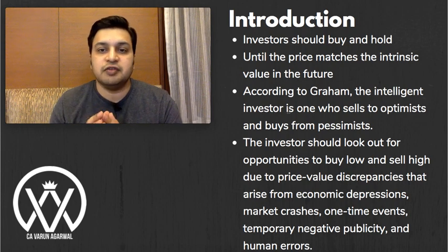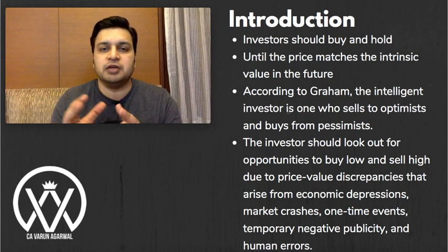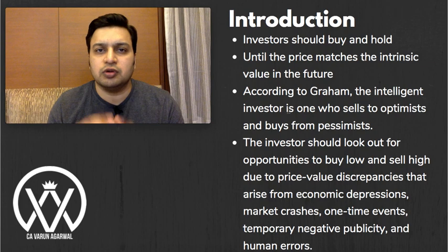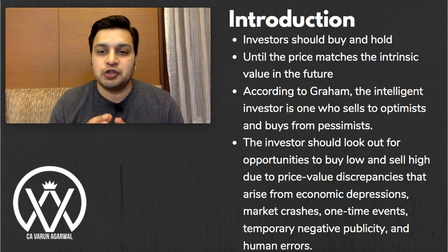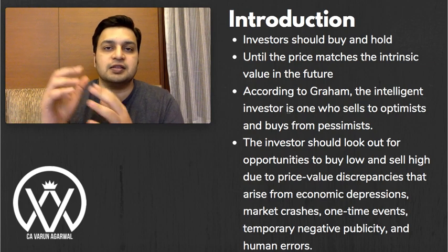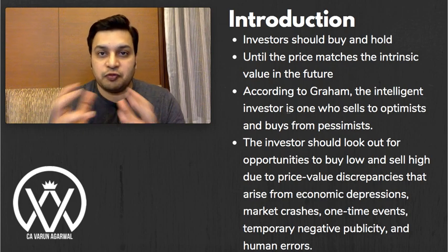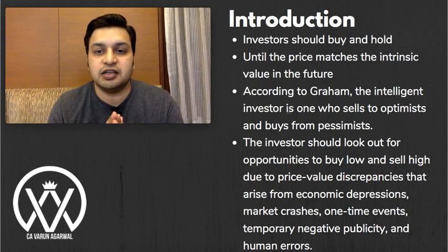According to Graham, the intelligent investor is one who sells to the optimist and buys from the pessimist. Whenever the market is going very high and people become too optimistic, an intelligent investor sells to those optimistic people. When the market is going down and people become too pessimistic, the intelligent investor buys from those pessimists. The investor should look for opportunities to buy low and sell high due to price-value discrepancies — the difference between the market price and the calculated intrinsic value.